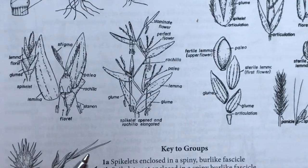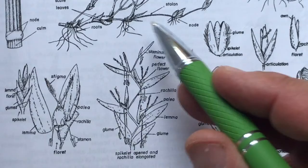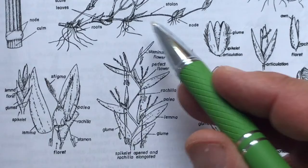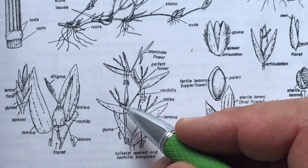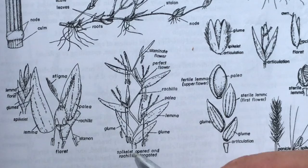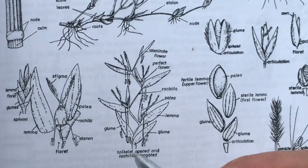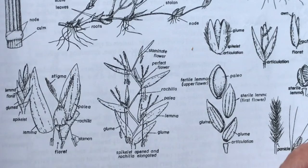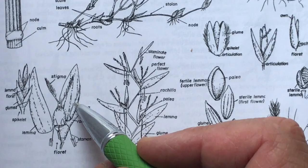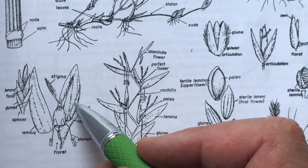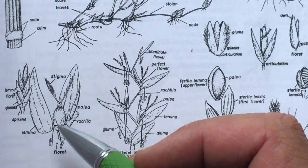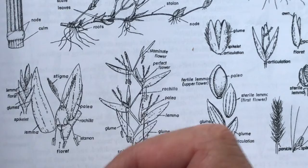Grass flowers themselves are very different. Here is an inflorescence. We would call this a spikelet that's opened and the rachilla is elongated — the rachilla being the center part there. Within that spikelet, we have individual florets, and those florets contain flowers. Each flower often will branch from the rachilla and it will contain a lemma and a palea. So no longer are we talking about petals and sepals; we're talking about lemma and palea.